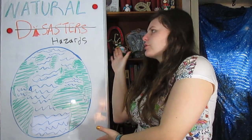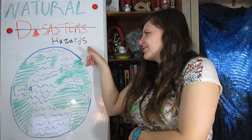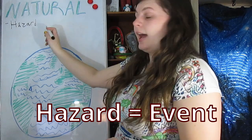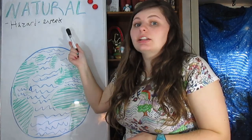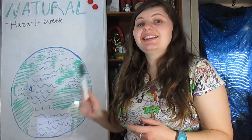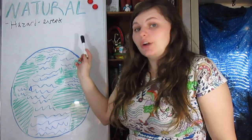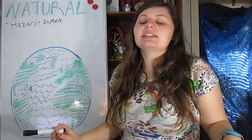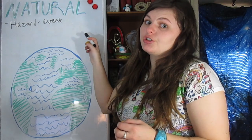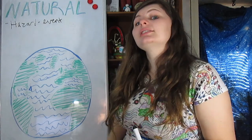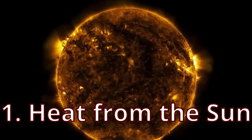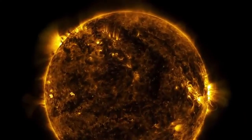So, what is a natural hazard and how is it different from a natural disaster? A natural hazard is the actual event — a natural phenomenon that might have a negative effect on humans and the environment. Natural hazards occur every day and affect millions of lives each year. They are caused by different energy sources, and there are four main sources, though they do overlap.